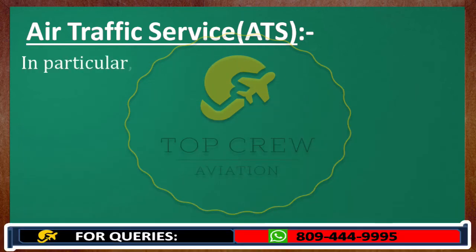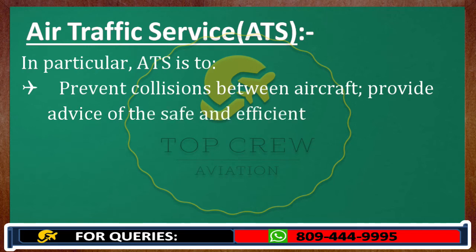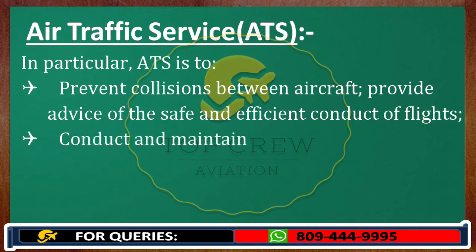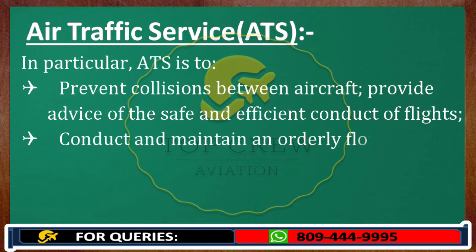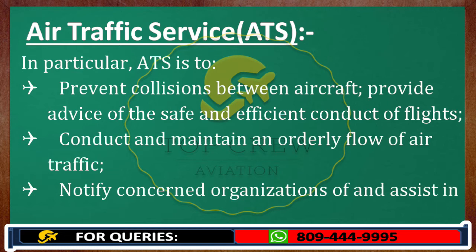In particular, ATS aims to: number one, prevent collisions between aircraft; number two, provide advice for the safe and efficient conduct of flights; number three, conduct and maintain an orderly flow of air traffic — which is the major work of ATS; and number four, notify concerned organizations and assist in search and rescue operations.